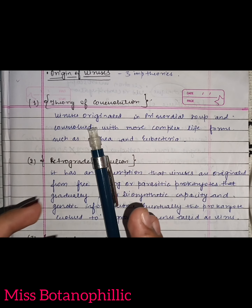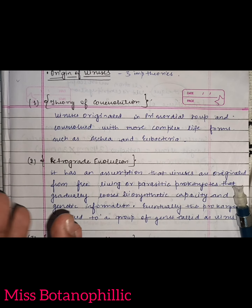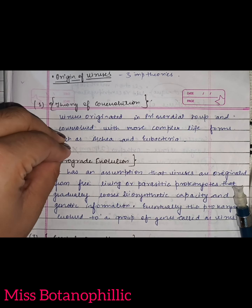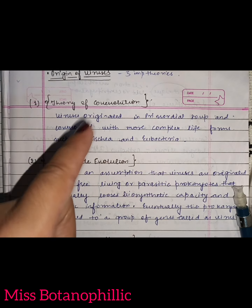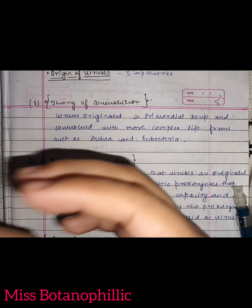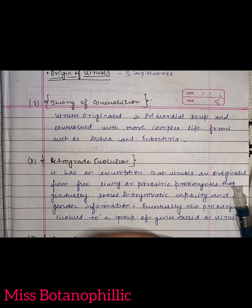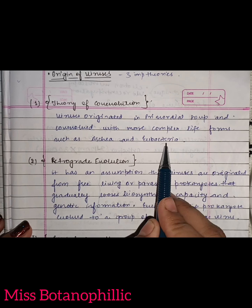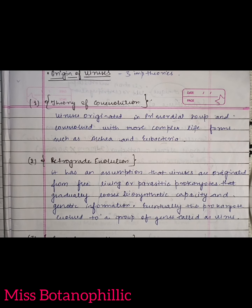This theory says that viruses existed in the primordial soup alongside other complex life forms such as archaea or eubacteria, and the virus also evolved alongside them. So the theory of co-evolution means that viruses and complex life forms like archaea or eubacteria evolved together in the primordial soup.